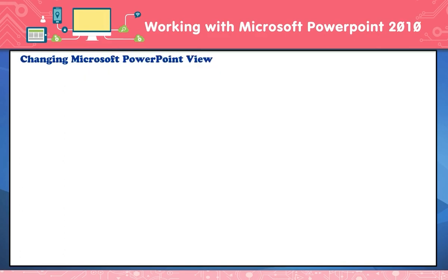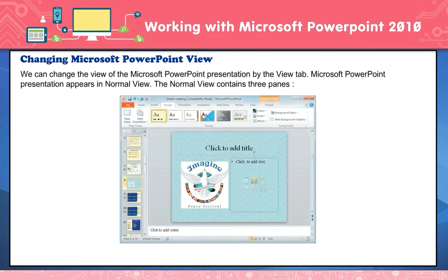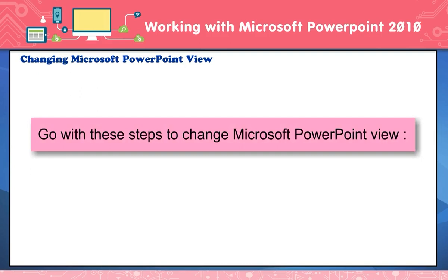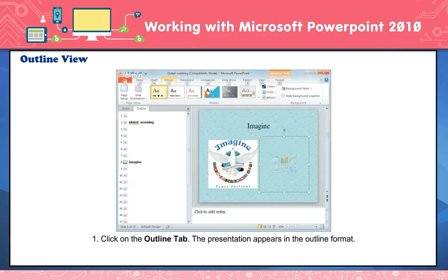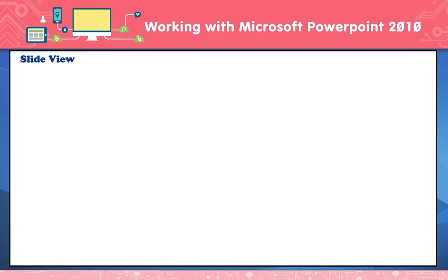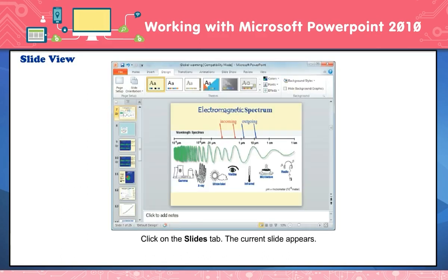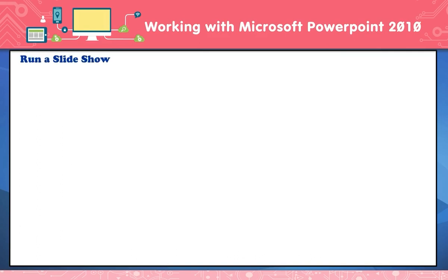Changing Microsoft PowerPoint view. We can change the view of the presentation using the View tab. PowerPoint presentations appear in Normal view by default. Normal view contains three panes: Outline pane, Slides pane, and Notes pane. To change the view: click Normal View in the View tab. For Outline view, click on the Outline tab — the presentation appears in outline format and you can click on the outline text to edit it. For Slide view, click on the Slides tab — the current slide appears and you can click on slides to navigate.